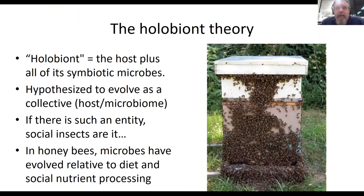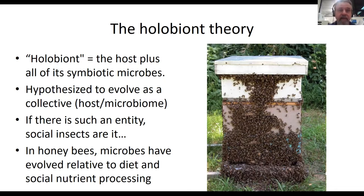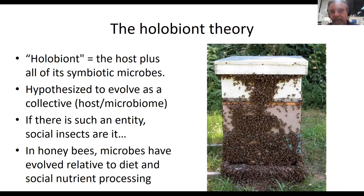One of the most interesting things to me about honeybees is they've been called a holobiont. This theory about the holobiont — like the movie Avatar, where everything in the world was connected — suggests that everything is connected and everything is evolving together. The key component of the holobiont theory is that things evolve as a collective: the host and the microbiome evolve together. This might be largely true of what's going on with some of the gut microbes, especially in honeybees.